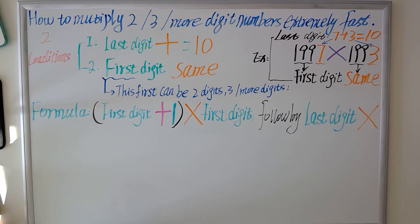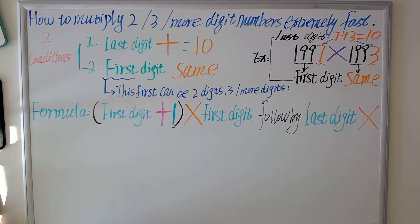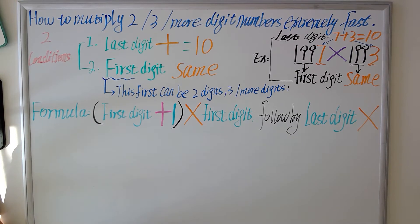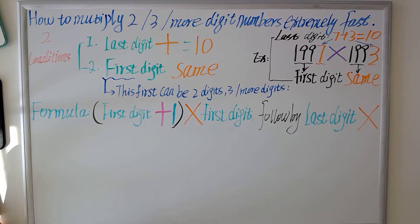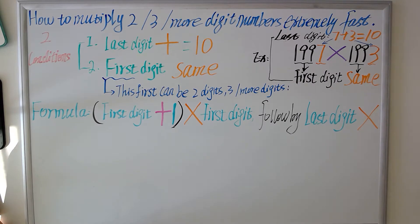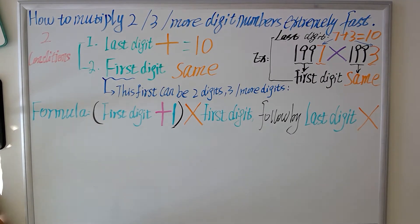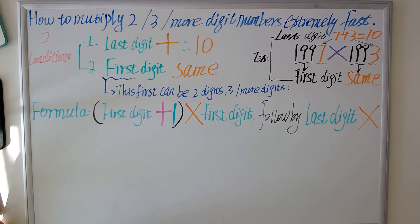Hey genius! Watching this video, you will calculate faster than a calculator. So how to multiply one or three or more digit numbers extremely fast?